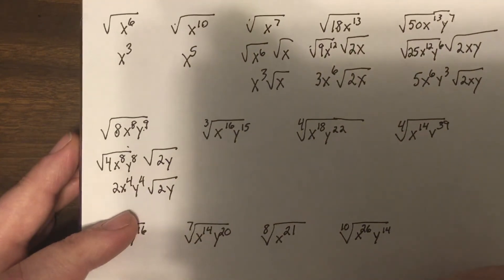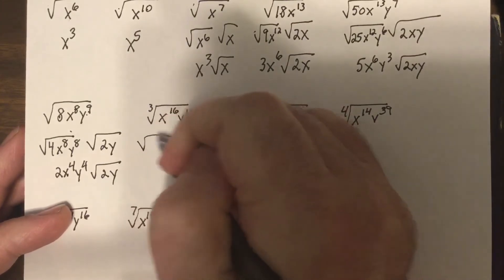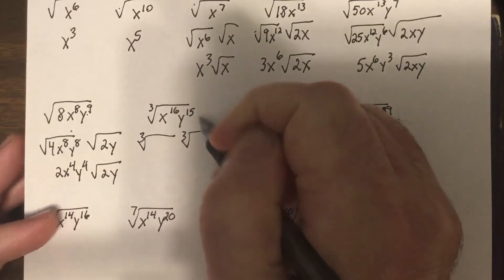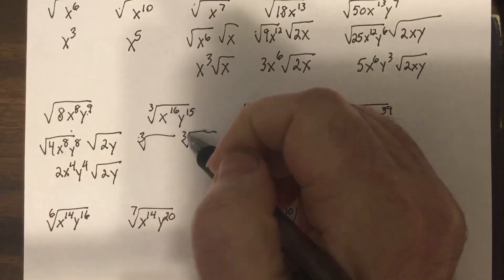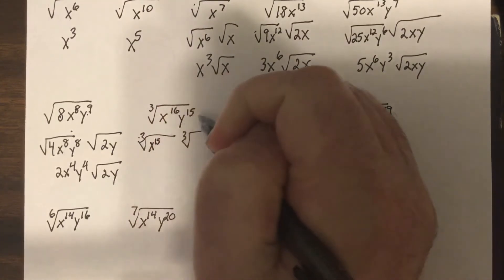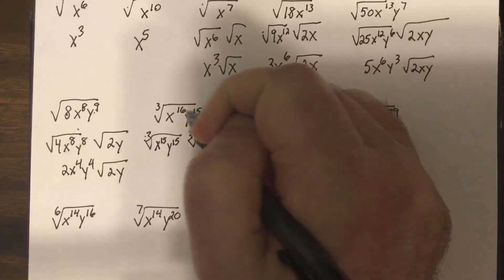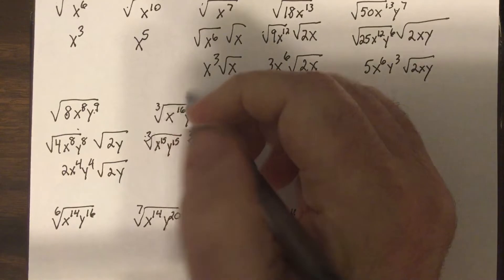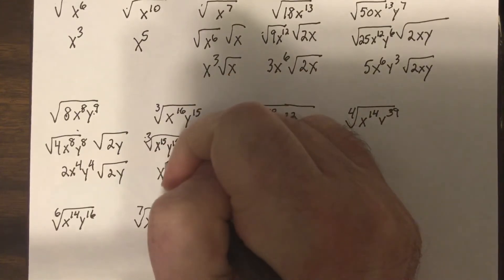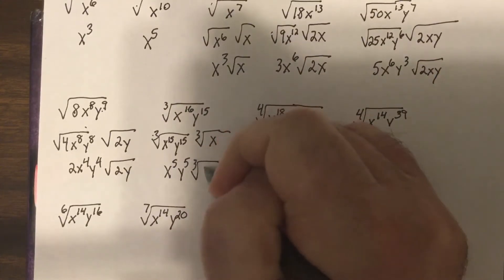Now we have cube roots, which are a little more challenging. For a cube root, the powers must be divisible by 3. For the cube root of X to the 16th Y to the 15th: Y to the 15th is divisible by 3, but X to the 16th leaves one X leftover after X to the 15th. So the answer is X to the 5th Y to the 5th times the cube root of X.